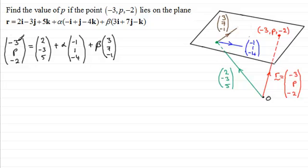Now, what I'm going to do is compare the i components and compare the k components. From that, I'll generate the two simultaneous equations, which we can work out what α and β are. And then I'm going to substitute those values for α and β in for the j component and get p.